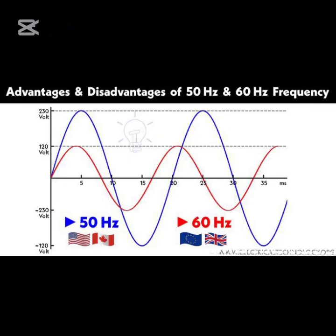Welcome back. Now let us examine the benefits of 50 Hz over 60 Hz power systems. There are several advantages of using a 50 Hz over a 60 Hz frequency, which includes the following.